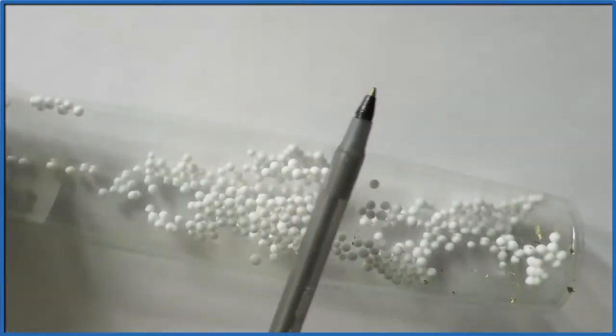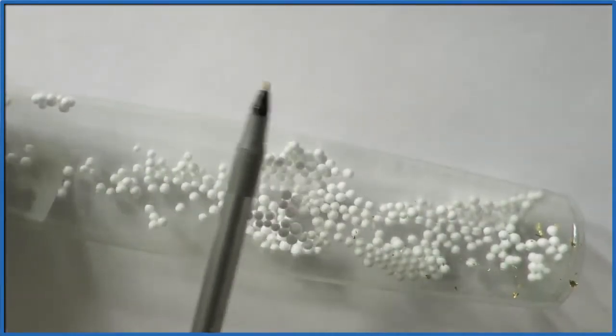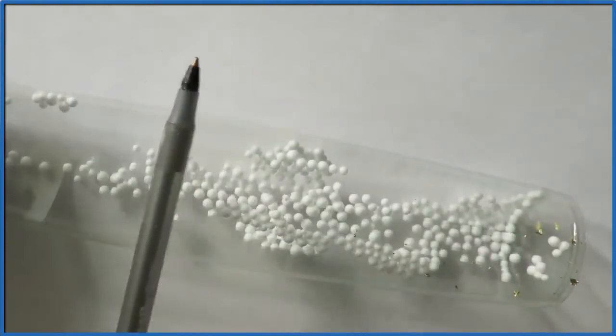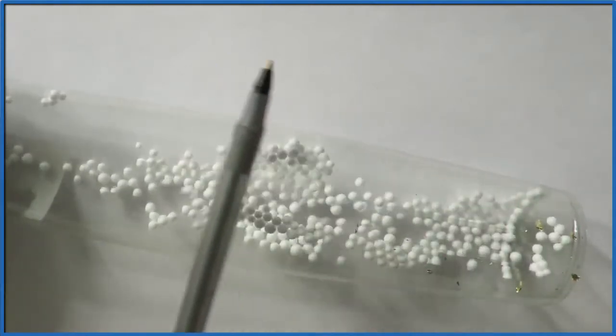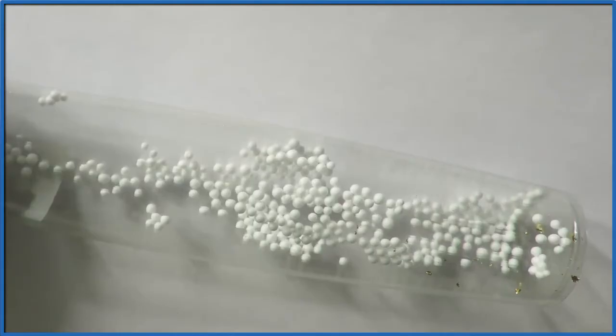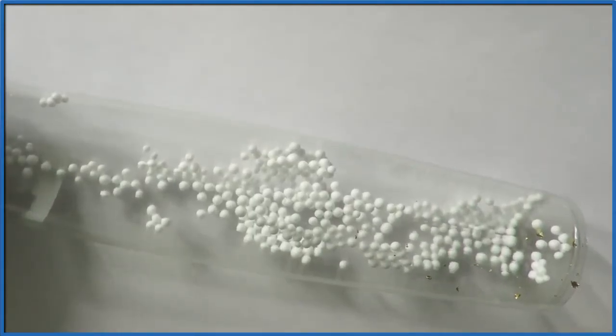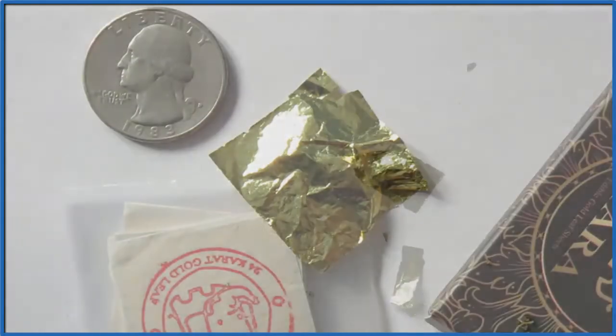Another problem is that while the gold foil is not attracted to a magnet, it is attracted to static electricity. You can see here these styrofoam balls are attracted to this pen that I rubbed over my hair to build up a static charge. The gold leaf itself is attracted to the plastic pen as well due to that static charge.